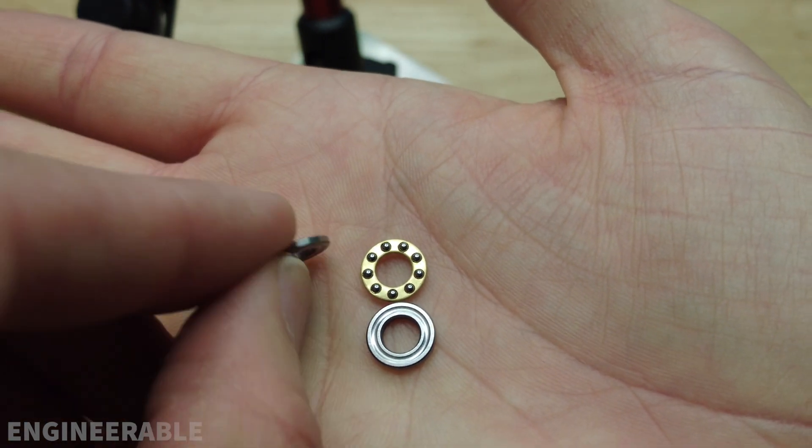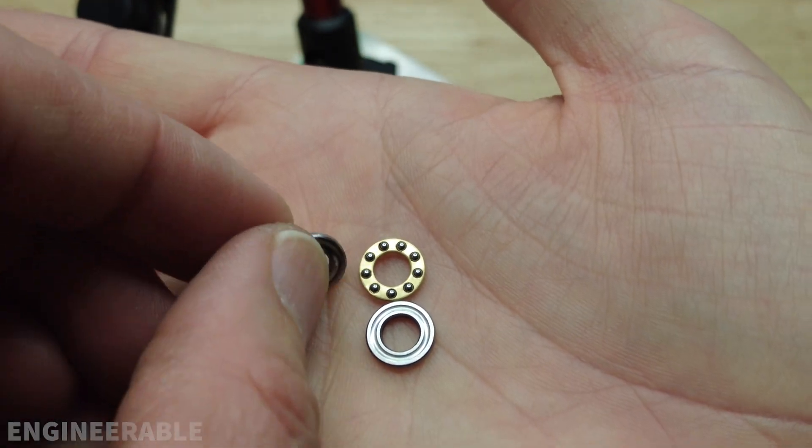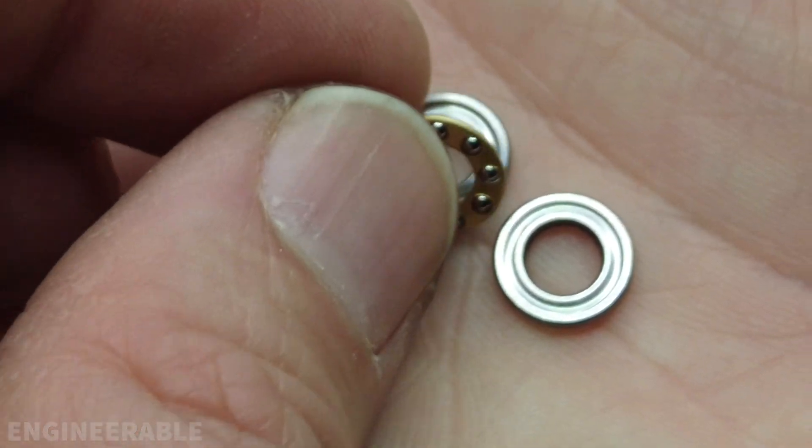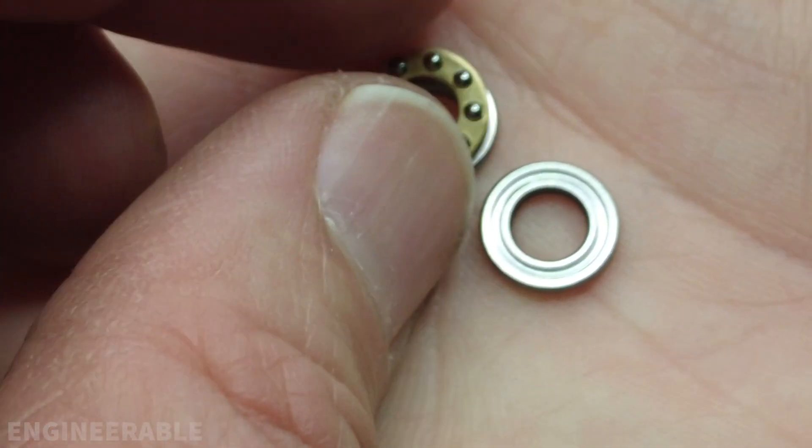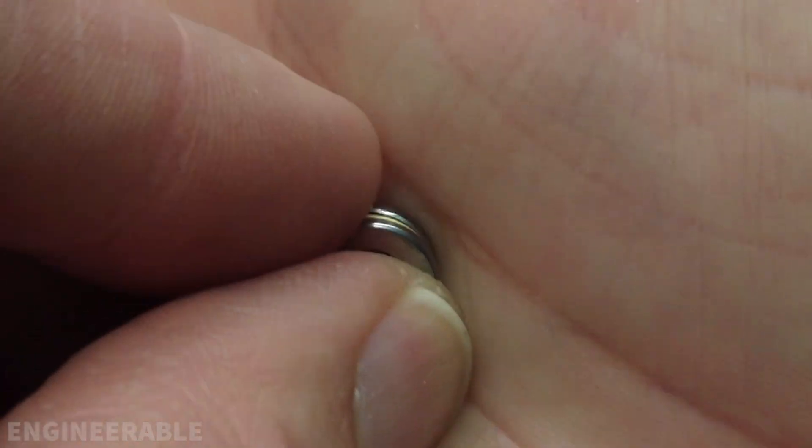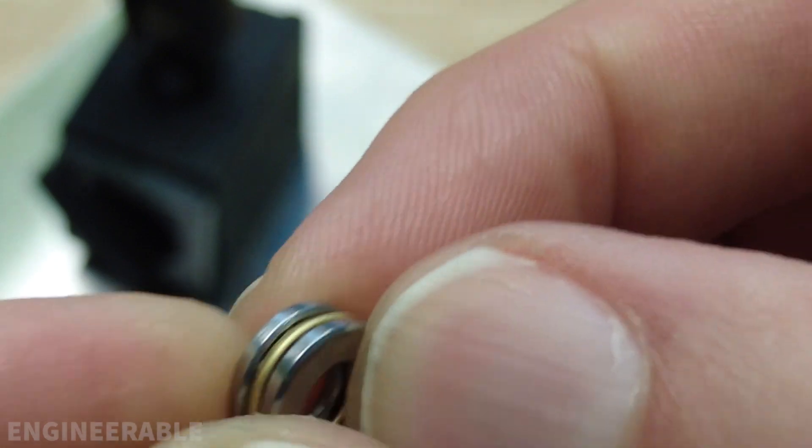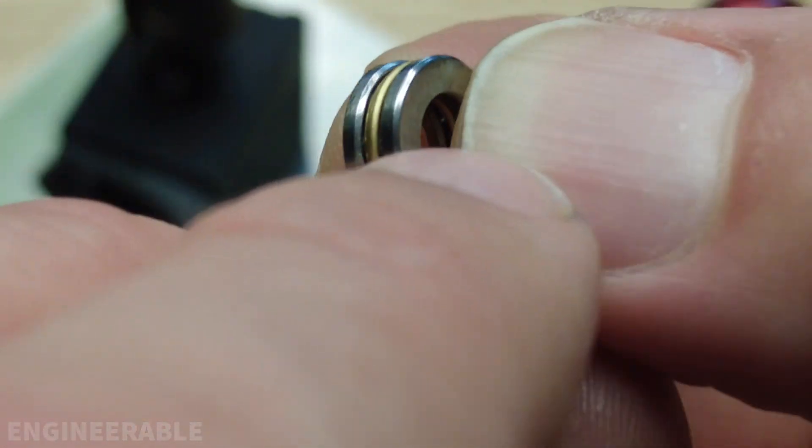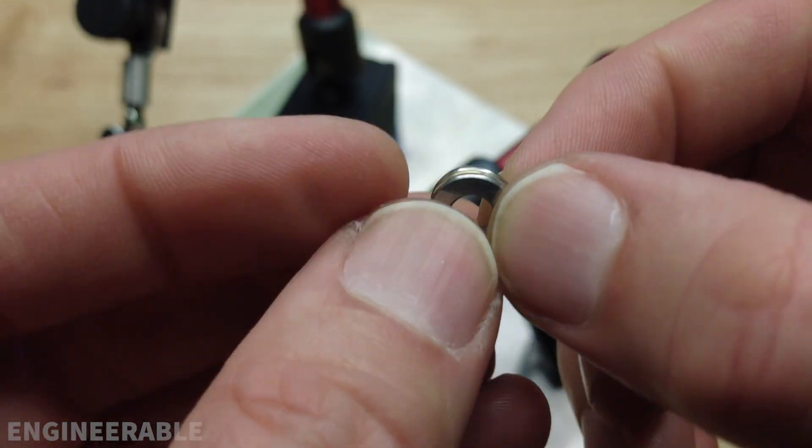The outer races on the thrust bearing will have one flat side and one grooved side, and the groove side is the side that the ball bearings will interface with. They'll go like that, then the other one you put the groove side against the ball bearings also, so you should have this little sandwich like this: outer race, ball bearings, outer race, and flat on both sides.